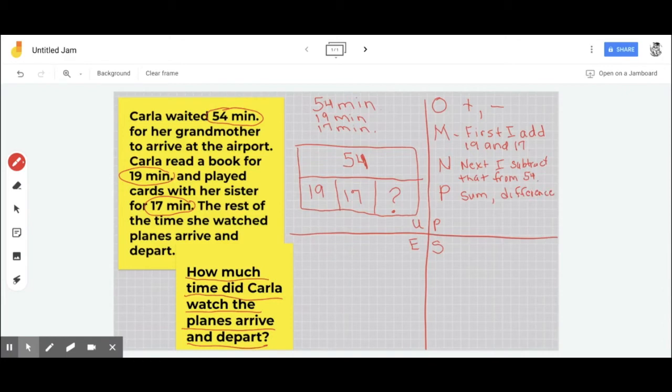Now I'm ready to solve. I'm going to use the steps that I had up here in my planning stage to solve. So the first thing that I did was I added 19 and 17. So let's add 19 plus 17.